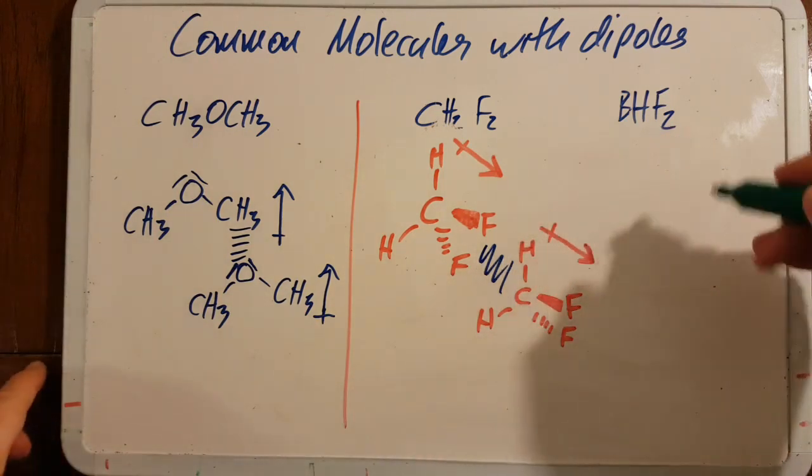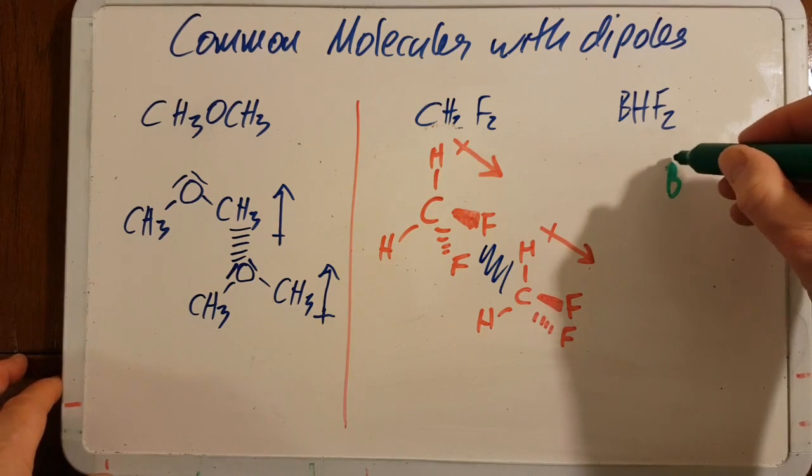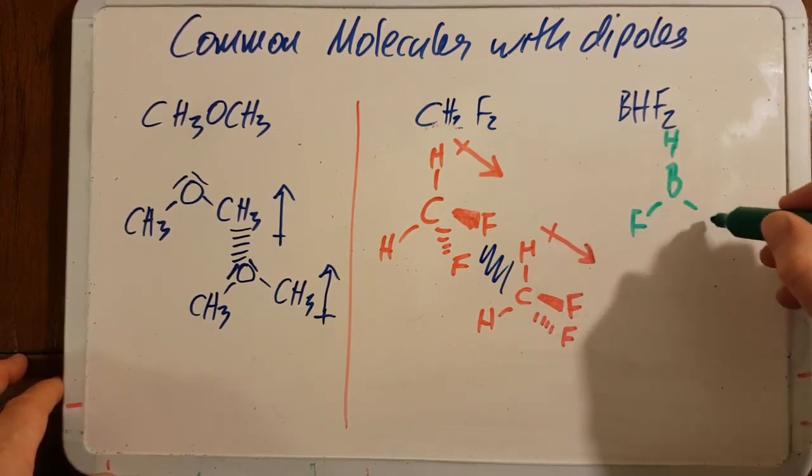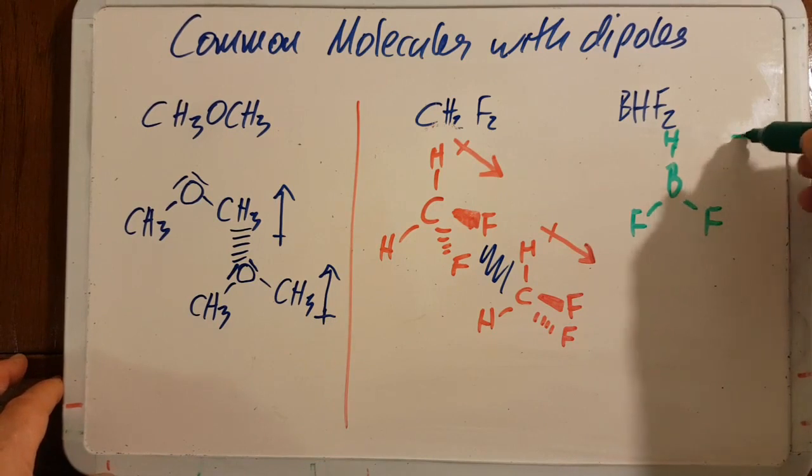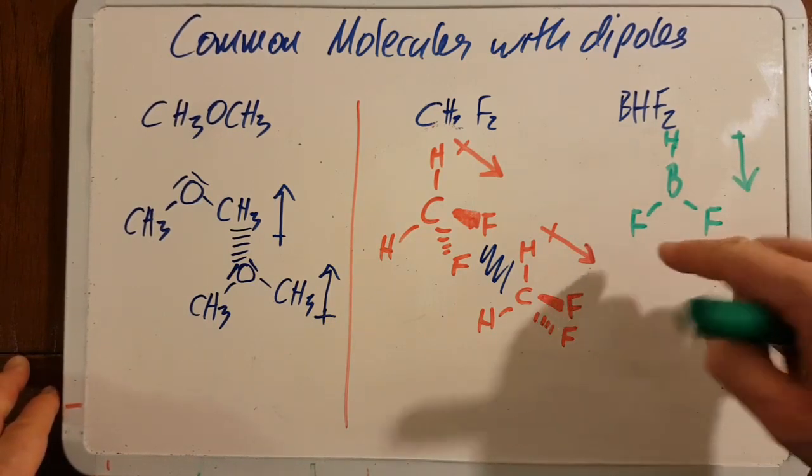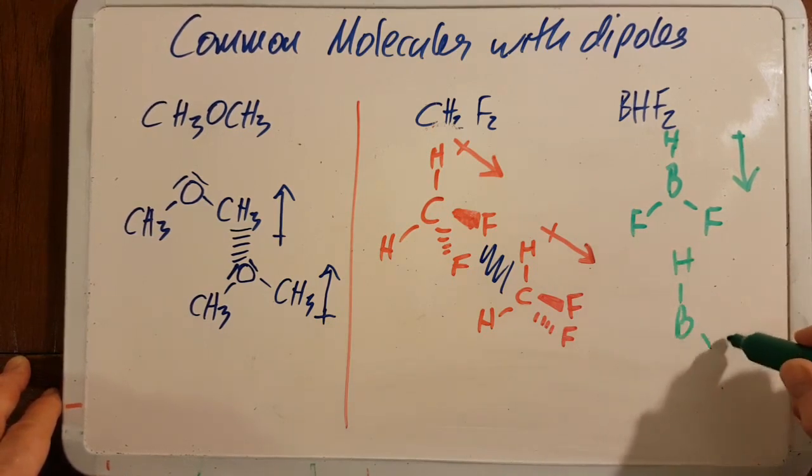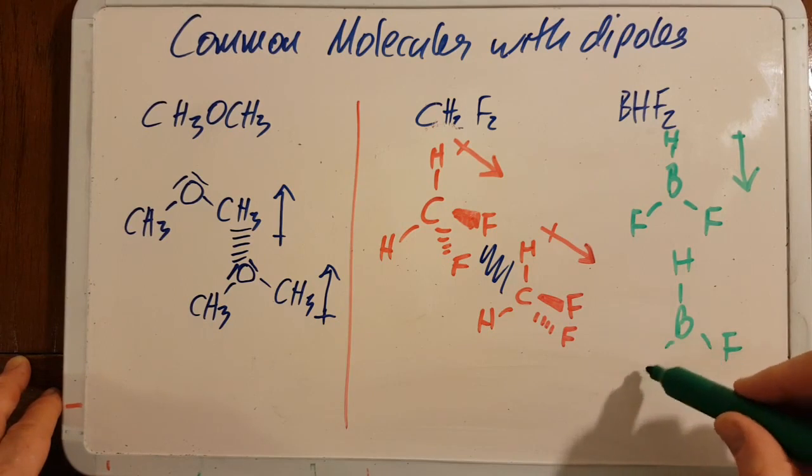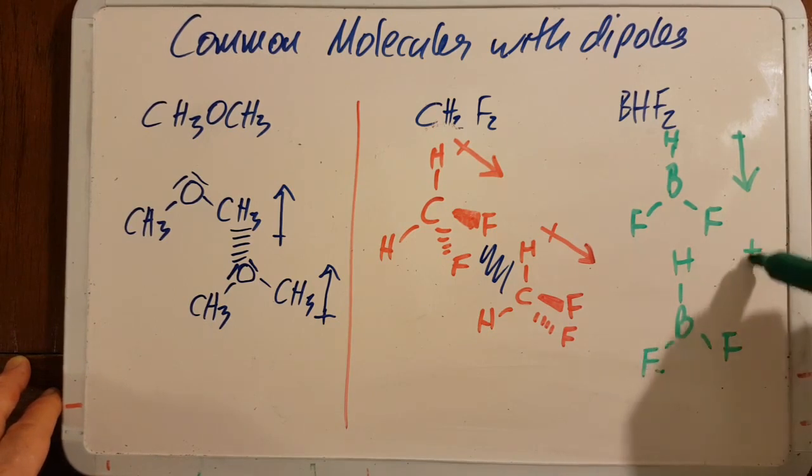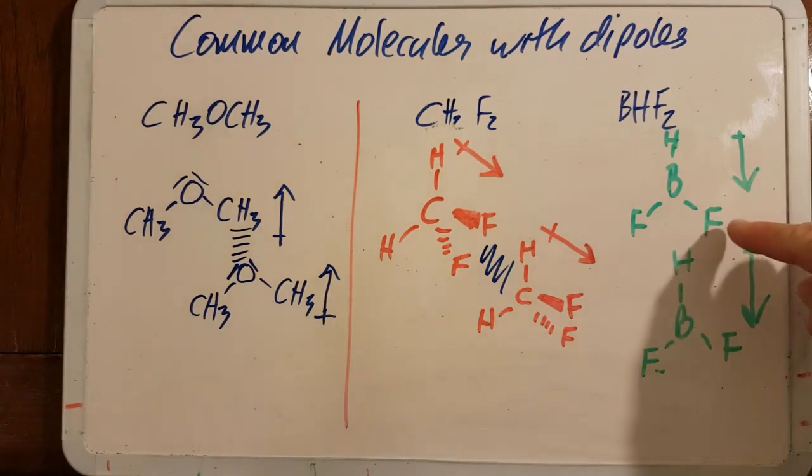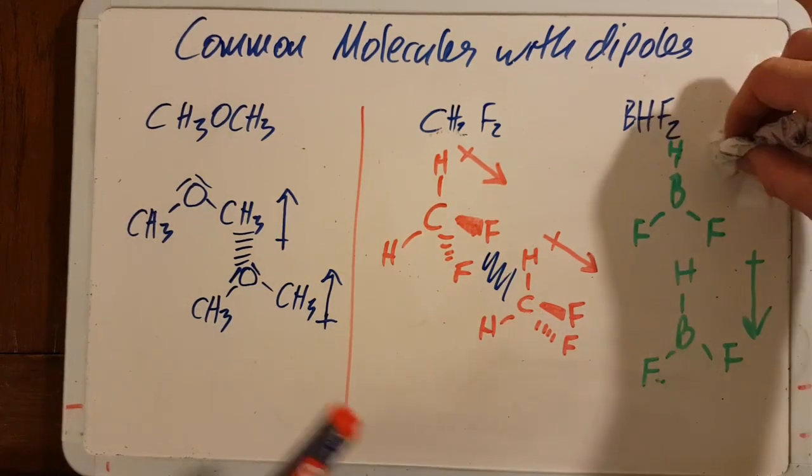And this one here (BHF2), again the dipole points the negative end towards the fluorines, and we just stack them up. So the negative end of this molecule—I'll make the dipoles the same—thornly, try to draw them the same length.